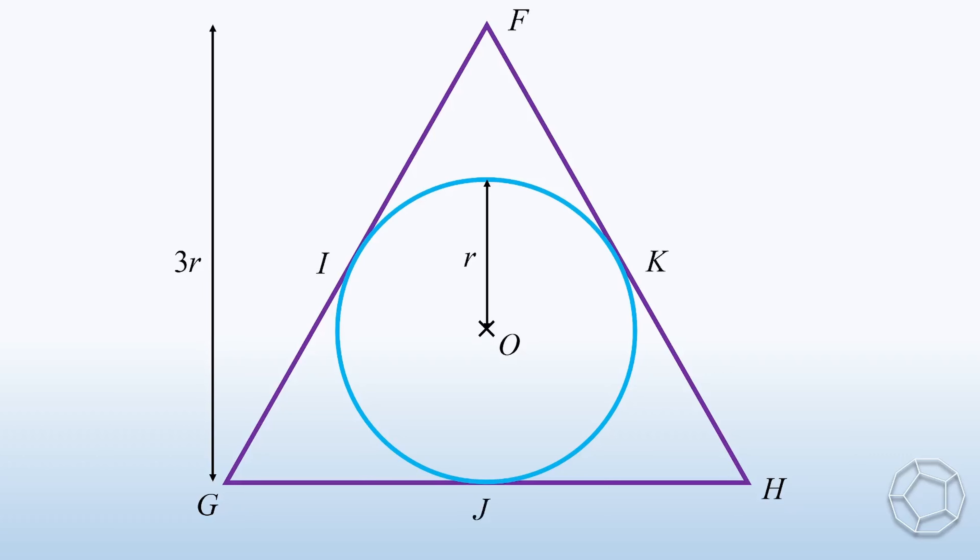We let the points I, J, and K as the three points of contact. Let's construct the two sides FOJ and OI. Clearly, FG and GH are tangents to the circle. So by tangent perpendicular to the radius, we have 90 degrees at the points I and J. This gives us two right-angled triangles.